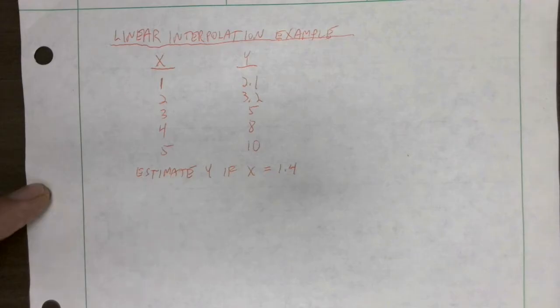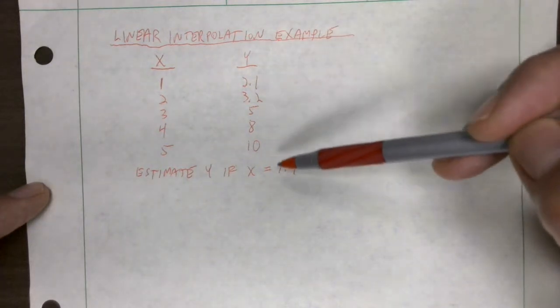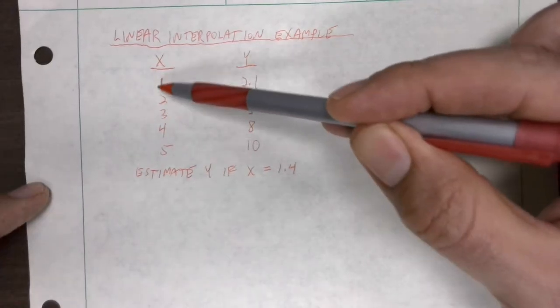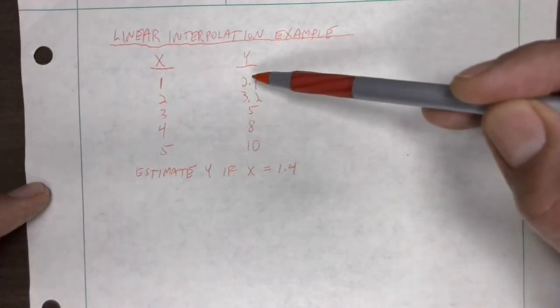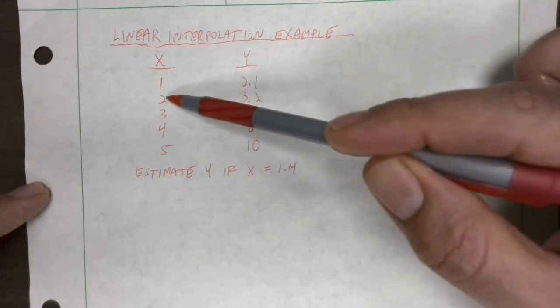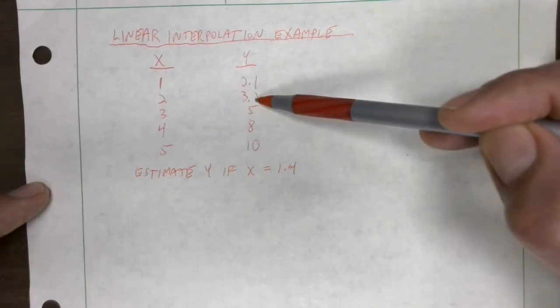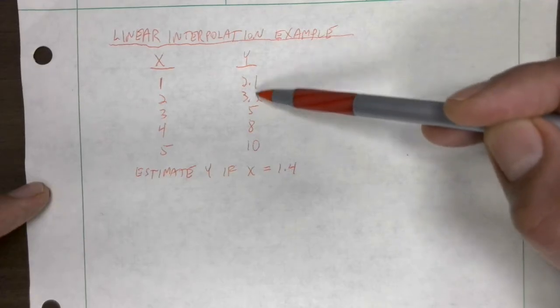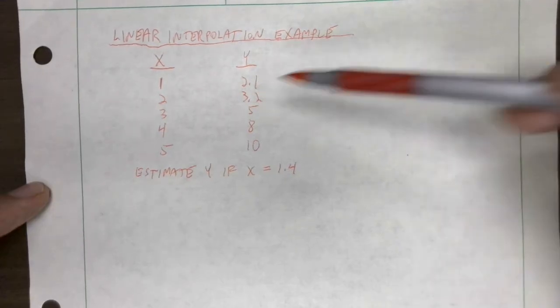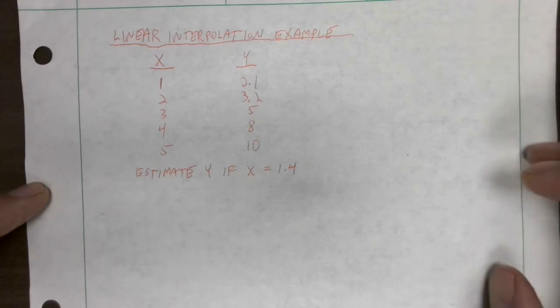If you're looking at this example, we're going to do a bunch of calculations. At the end though, you want to make sure you take a step back and think about whether the answer makes sense. It's very important for engineering to be able to think about whether your calculations make sense. Since x is 1.4, which is between 1 and 2, the answer we get better be between 2.1 and 3.2. If it's not, we probably made a mistake somewhere and we want to go back and double check.